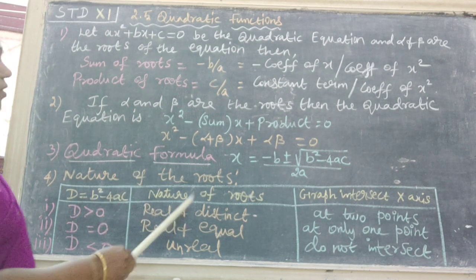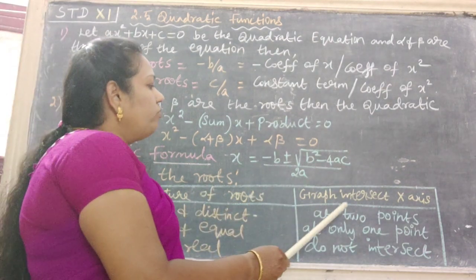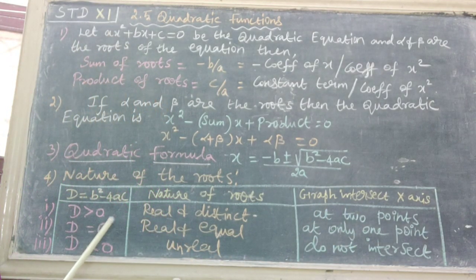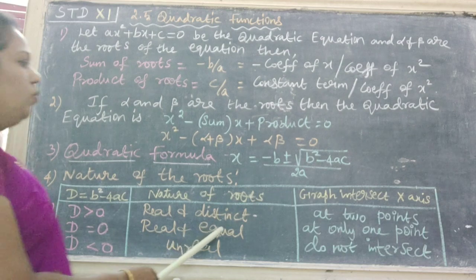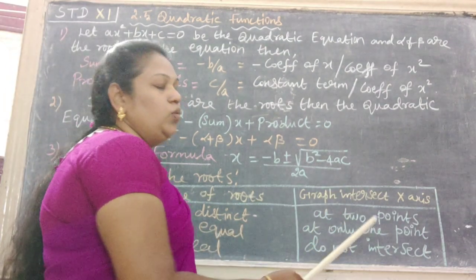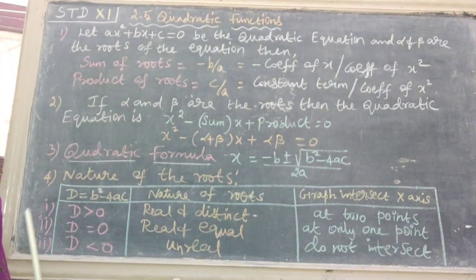The nature is real and distinct. Therefore, the graph intersects at two points. Second one: D = 0, that is real and equal. The graph intersects x-axis at only one point.